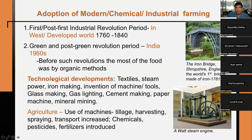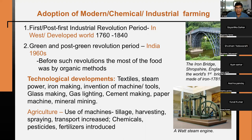The technological developments during the Industrial Revolution included advances in textile machinery, steam power, steam engines, iron making, glass making, gas lighting, and cement making. In agriculture, these technologies also found their place — use of tillage machines, harvesting, spraying, and transport increased. Chemicals, pesticides, and fertilizers were introduced during and after the Industrial Revolution period.